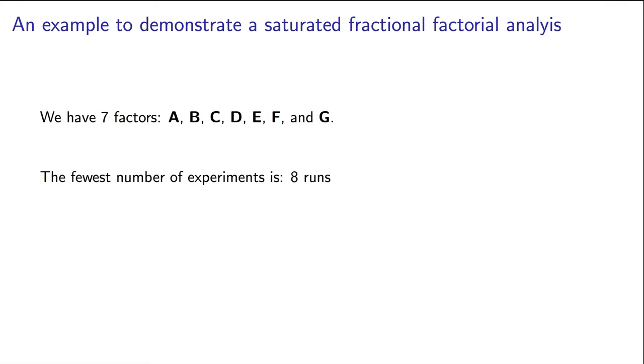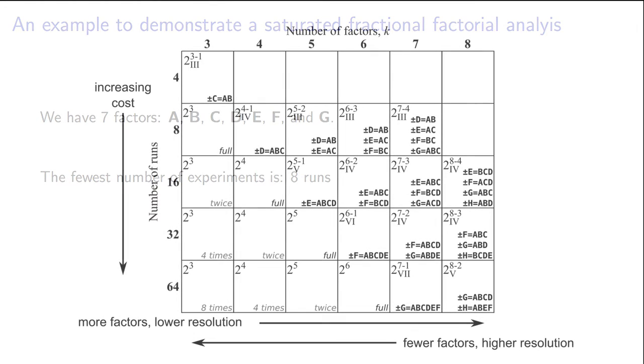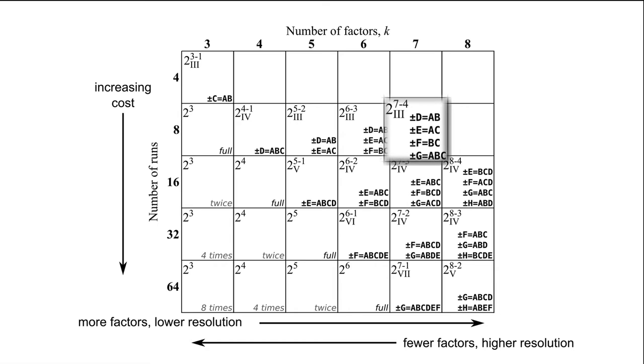In this example, we are going to use seven factors and the fewest possible experiments. That's eight experiments. We're going to screen out which of those seven factors really affect our outcome. So, it is a screening design with eight experiments and a resolution of three. I could choose more experiments and then go to higher and higher resolutions. But let's see what happens when we start with just eight experiments and seven factors.